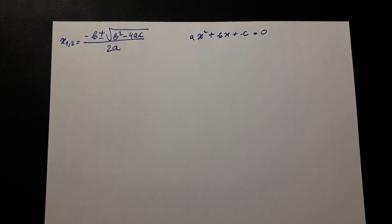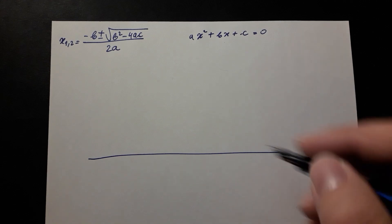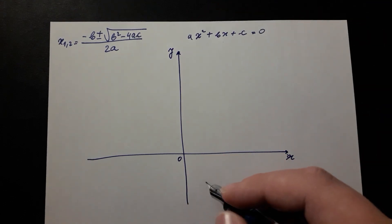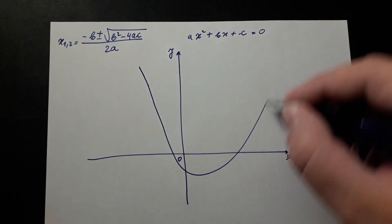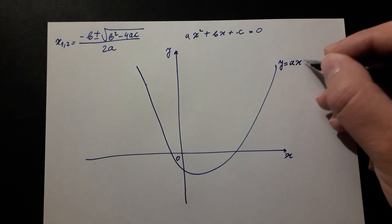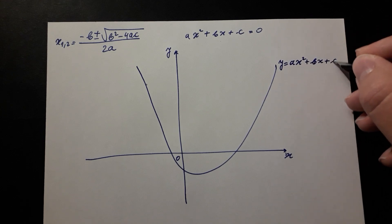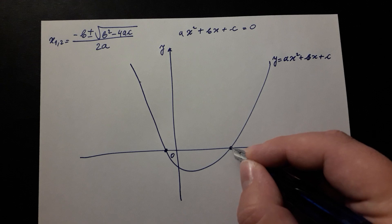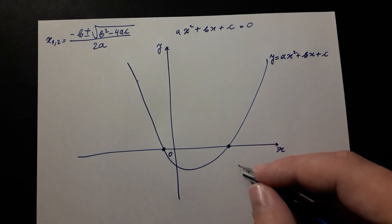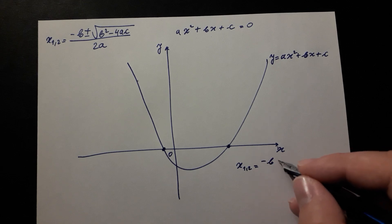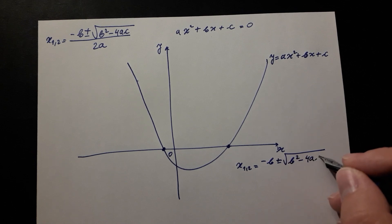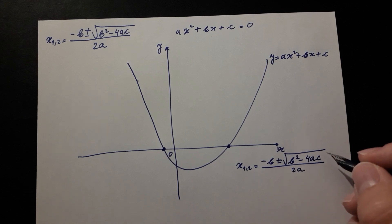Just a little reminder. The quadratic formula describes the points shown here on the graph. We have Descartes' coordinate system with x-axis and y-axis and zero at origin, and we have some quadratic function ax squared plus bx plus c. This quadratic function intersects the x-axis at these two points. These two points can be found by the quadratic formula: x₁ or x₂ is equal to negative b plus or minus the square root of b squared minus 4ac, divided by 2a.